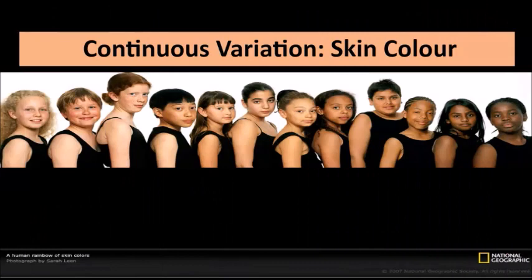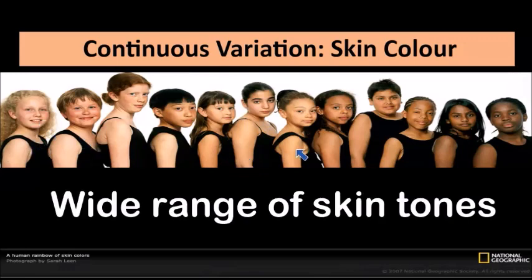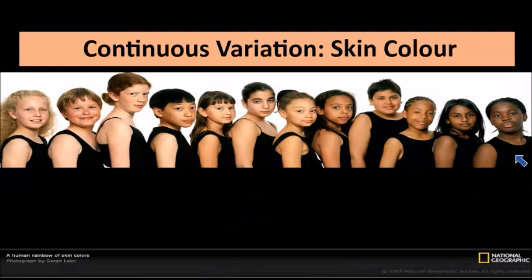And just to finish off, skin color is a good trait to examine when dealing with variation. With continuous variation, you go from the lightest individual, through intermediate colors, to the darker individuals — so you have extremes and intermediates within the particular population. Skin color is a perfect example of continuous variation.